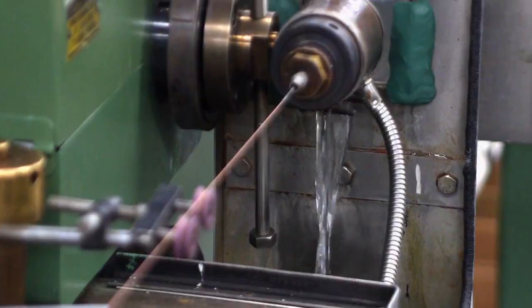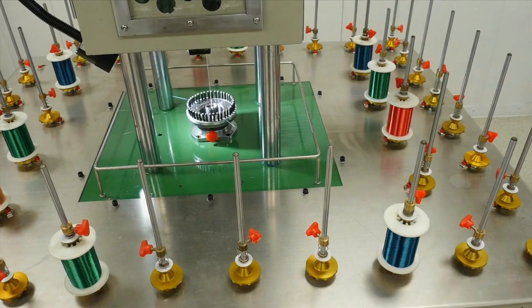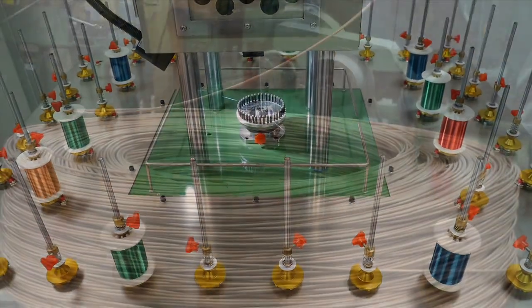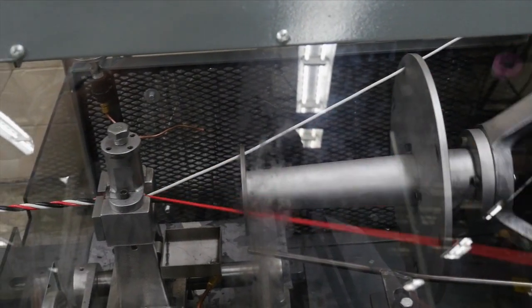Refined extrusion processes allow us to apply plastic materials to our cables as thin as one one-thousandth of an inch. This enables us to manufacture ultra miniature coaxial conductors that are incorporated into not only single conductor products but complex multi-conductor designs.